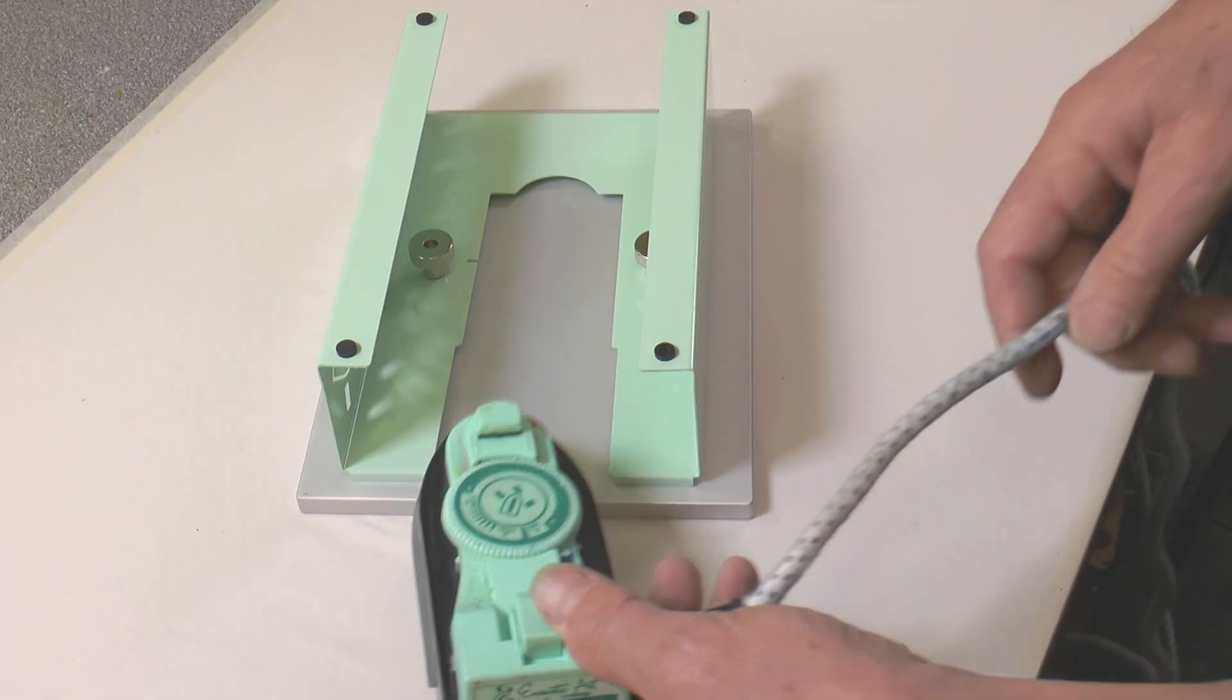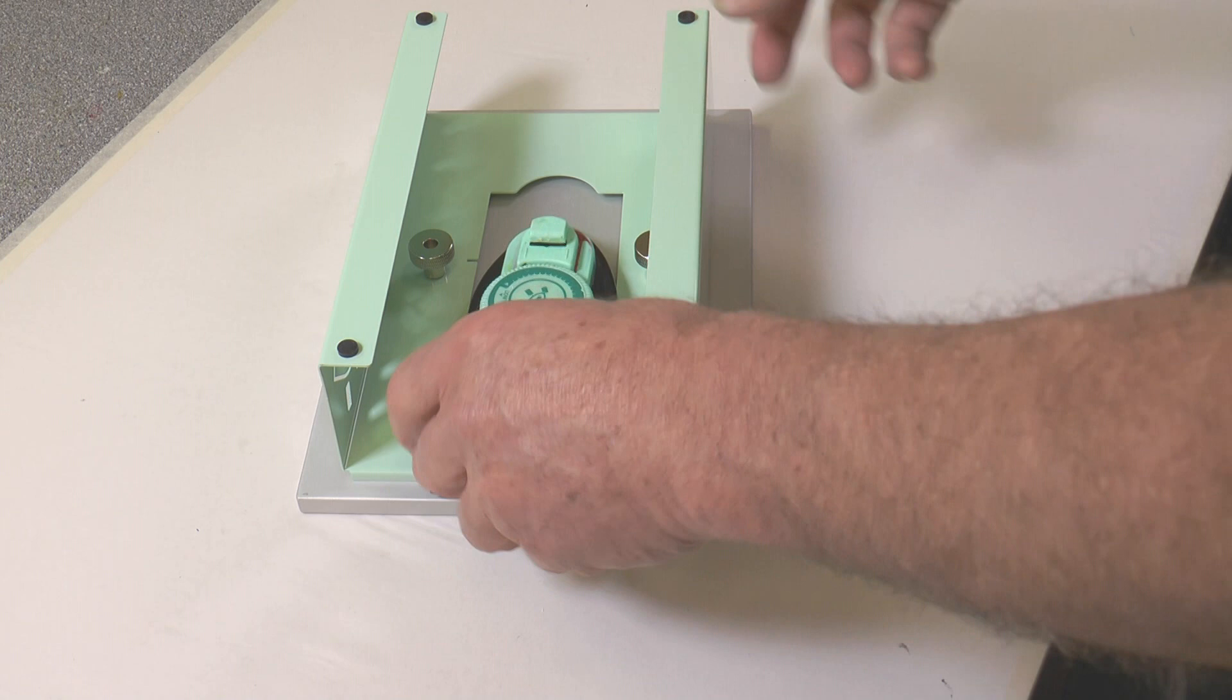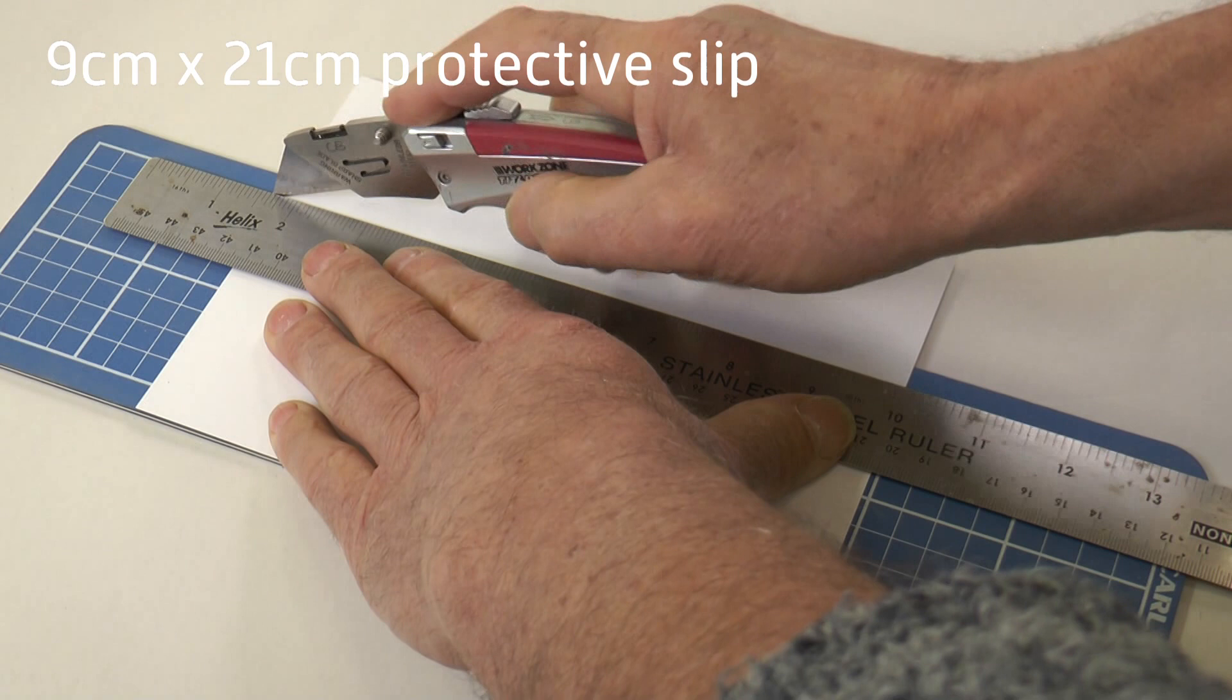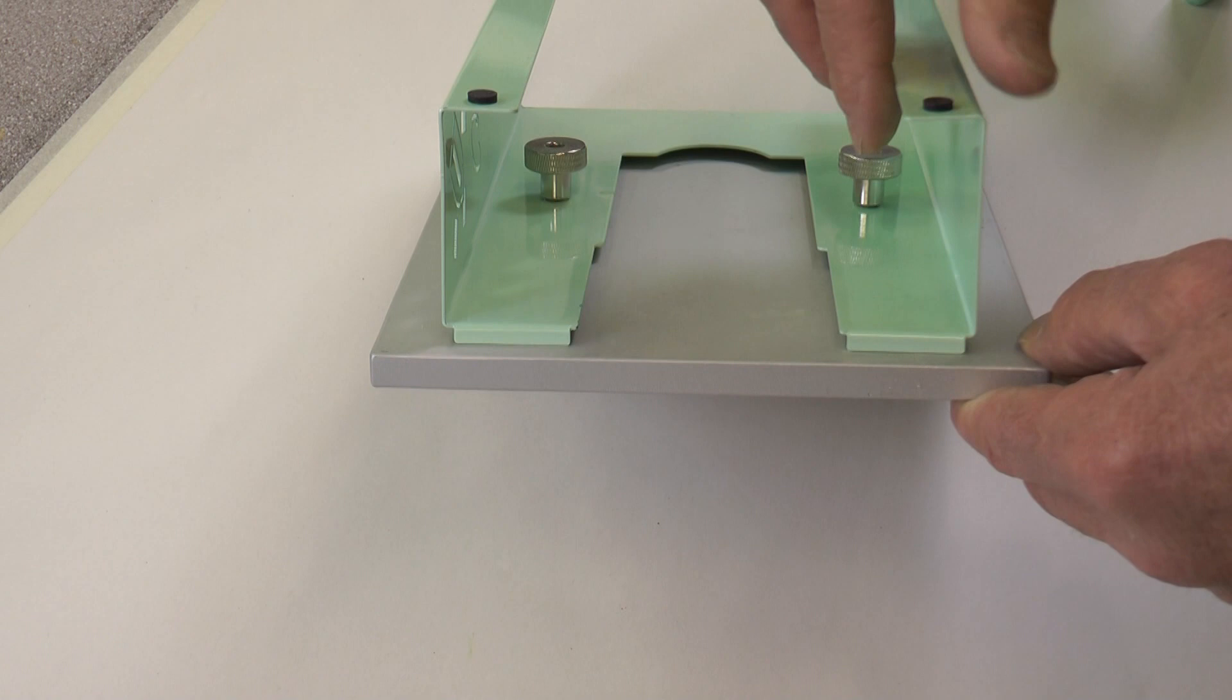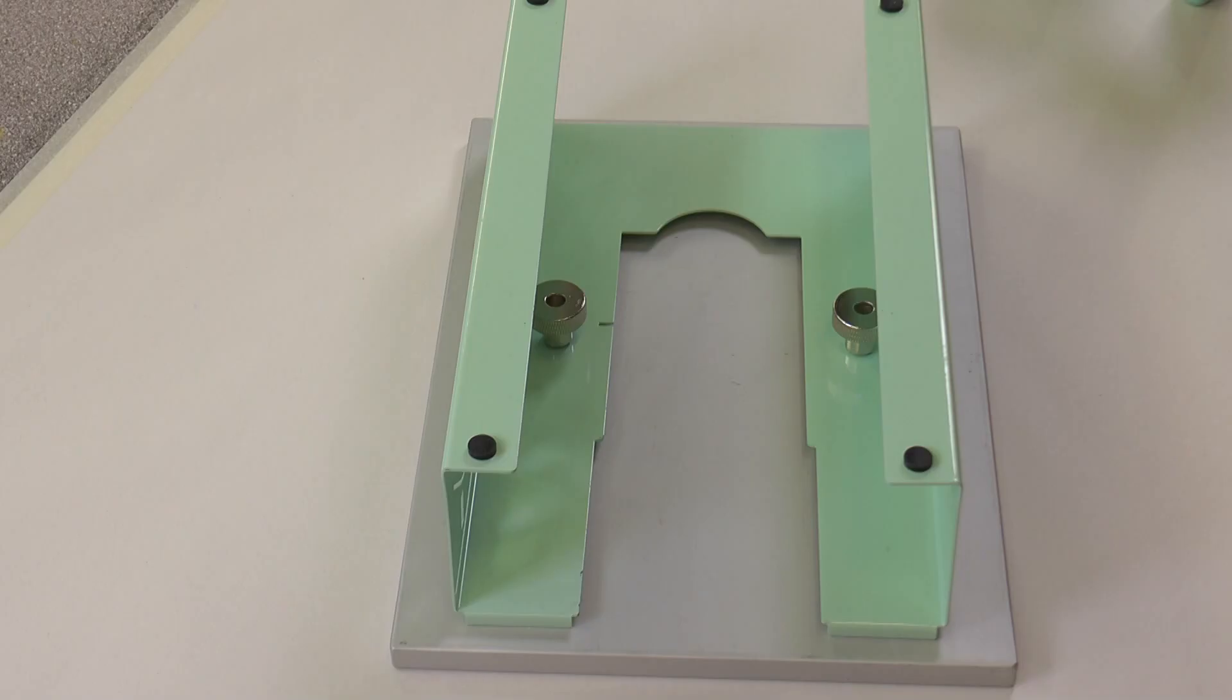When you put the soft metal of the iron onto the hard metal of the aluminium it can be wise to use a paper slip to protect the metal surfaces from rubbing against each other. Undo the knurled nuts sufficient that you can lift the stand up easily to first slide in the paper slip.